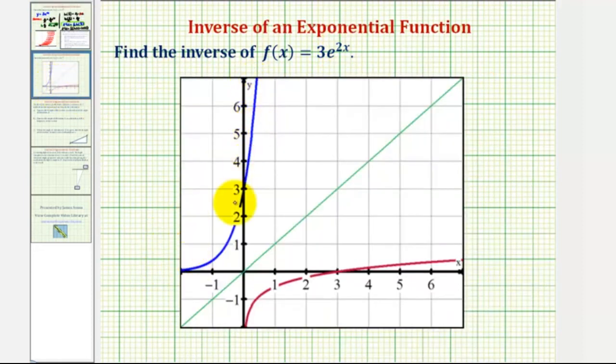So here's the given function in blue. Here's the graph of the inverse function in red. The reason we also want to graph y equals x is because remember, a function and its inverse are symmetrical across the line y equals x. And notice how if we were to fold this across the line y equals x, the two functions would match up perfectly, verifying we found the inverse function correctly.